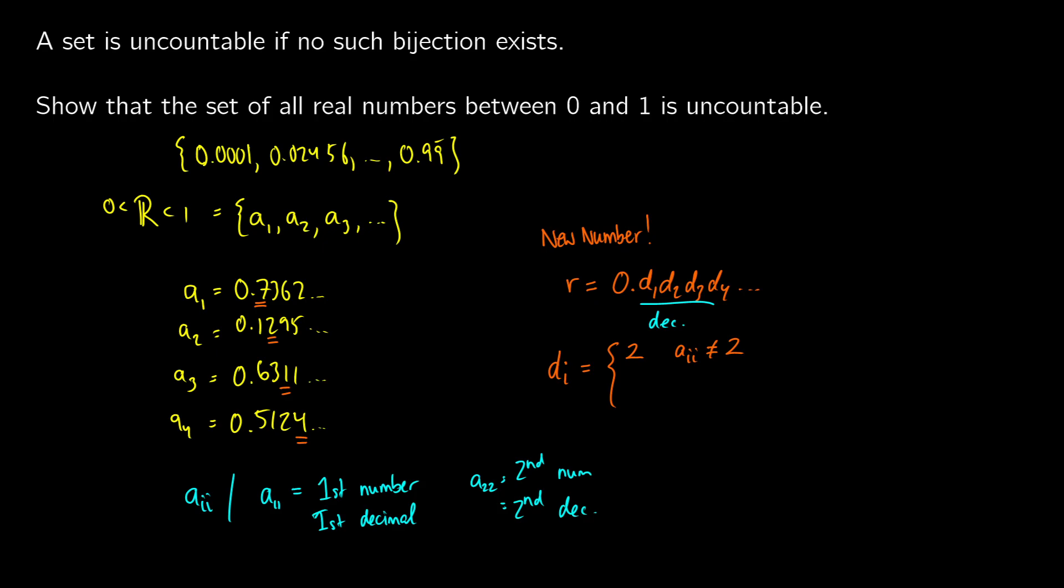In other words, we're basically going to change that first bit in a1 to be 0.2 if we don't have a 2 in that tenths place. And we're going to change it to 3 if aii is equal to 2. So in other words, if the third position of the third number is 2, we'll turn it into 3.